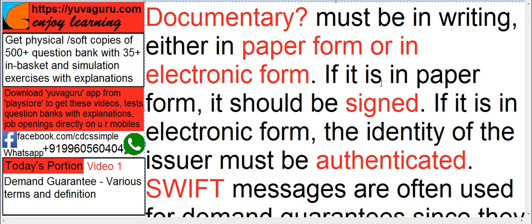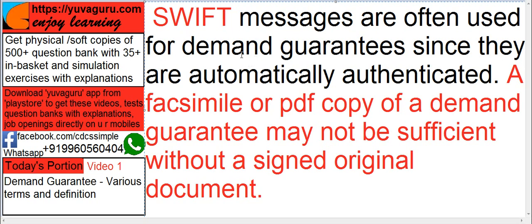It should be authenticated basically. And if it is in electronic form, then the identity of the issuer or the sender must be authenticated. How do you authenticate an electronic document? That is by SWIFT. SWIFT gives the correct authentication of the sender. That's why SWIFTs are used — because they are automatically authenticated, except the 9th series. Next is a fax — a facsimile or PDF copy of a demand guarantee — may not be sufficient without a signed original document. This signed doesn't mean only a physical signature; there are various types of signatures.